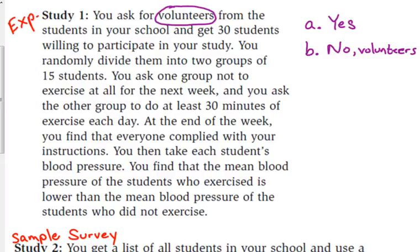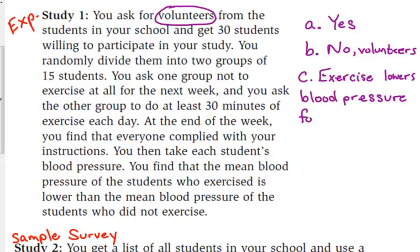Part C says exactly what can we conclude? The answer is that exercise lowers blood pressure for those involved in the study. The results aren't invalid — it's just that we can't apply them, we can't generalize them to everyone.